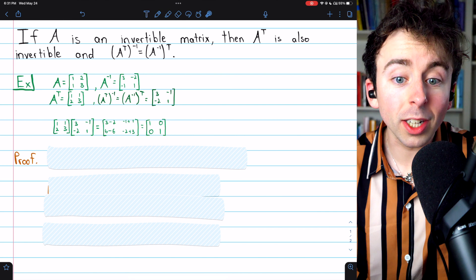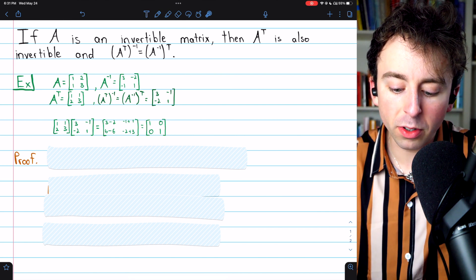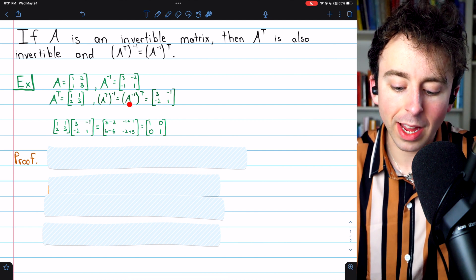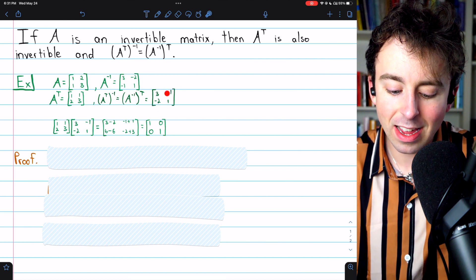And now we're claiming that the inverse of A transpose is just the transpose of A inverse. So by interchanging the rows and columns of A inverse, we get A inverse transpose, which is this here.